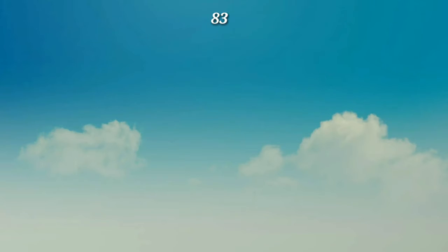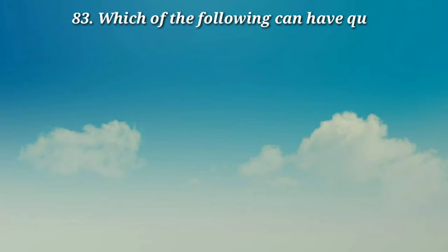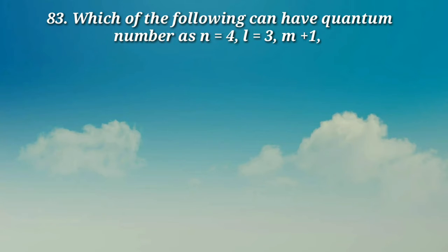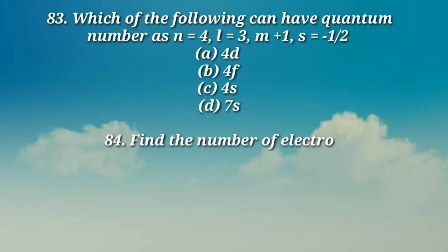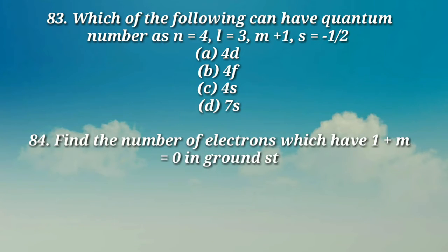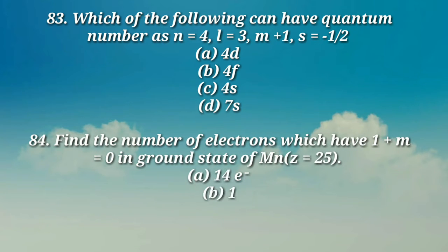Question number 83: Which of the following can have quantum numbers n equals 4, l equals 3, m equals plus 1, s equals minus 1/2? (a) 4d, (b) 4f, (c) 4s, (d) 7s.